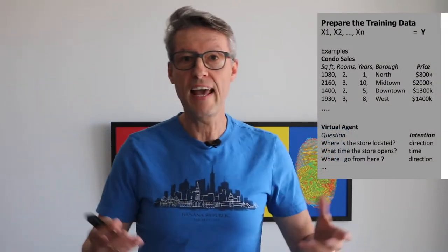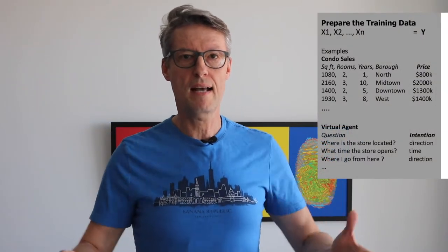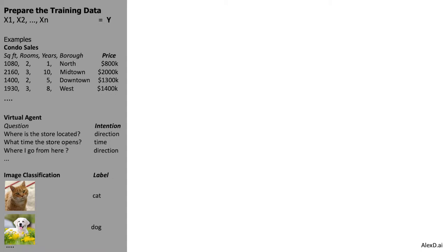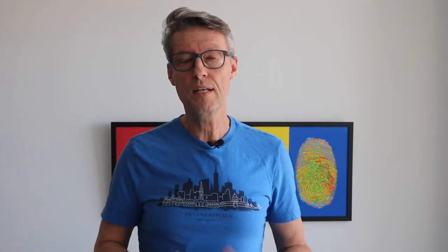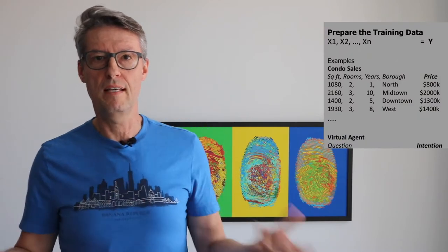Let's look at three different examples. The first one is a condo sale. What kind of data do you have to train a model in this situation? You have information about the last condos you have sold — for example, the square feet, the number of rooms, how many years old the condo is, where the neighborhood is, and where the border is. And you have the price at which you sold the condo. You use these different examples to train a model.